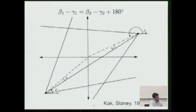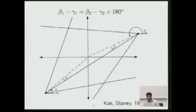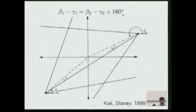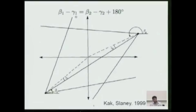In the parallel projection case, there's a simple relationship between data taken at projection angles 180 degrees apart — the data is just mirror images of each other. So in parallel projection, you only need data from 0 to 180 degrees. In the fan beam geometry, the relationship is more complicated. In order to have redundant data — two equal ray integrals at different projection angles — you must satisfy a condition where gamma is the angle of the ray, beta is the angle of the source, and gamma is the angle of the ray in the fan beam for that particular source.